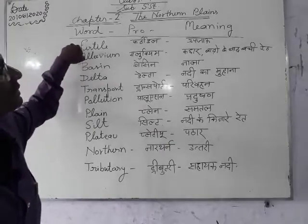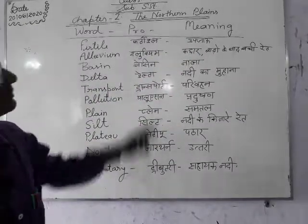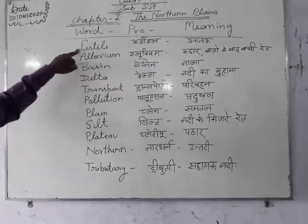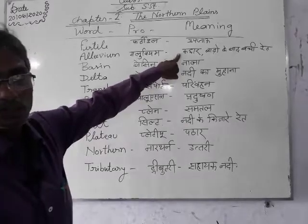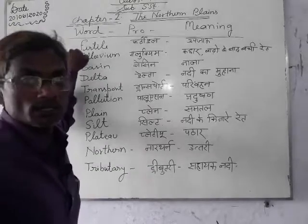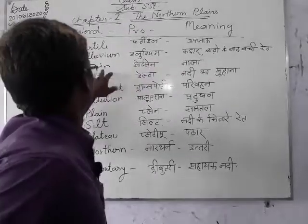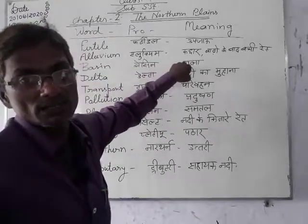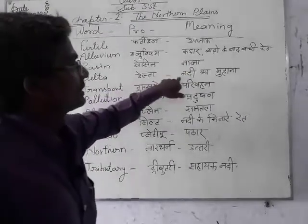Fertile — उपजाऊ. Alluvium — कचार. Basin — नाला, जिससे होकरके नदियों में पानी जाता है. Delta — नदी का मुहाना.